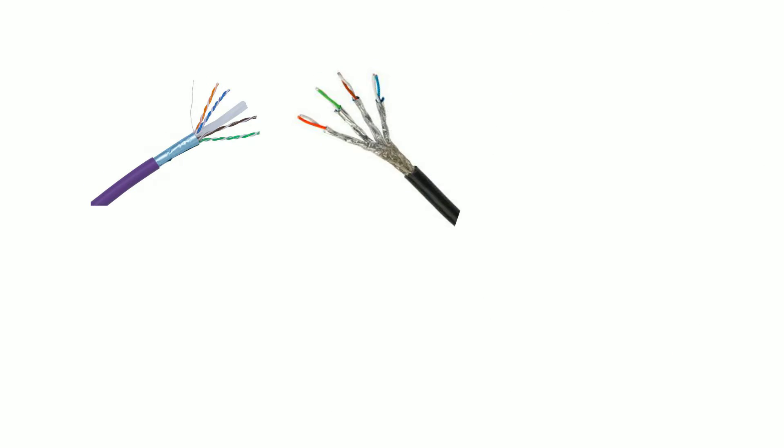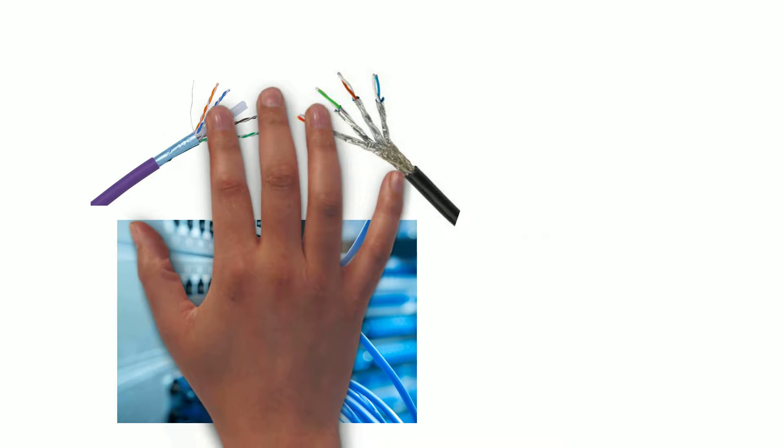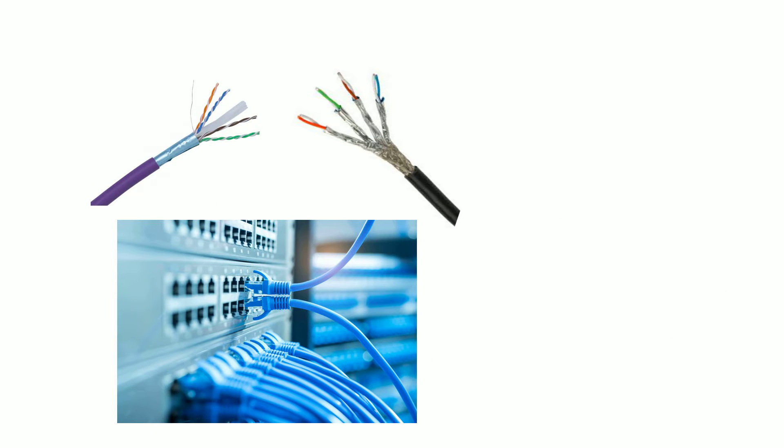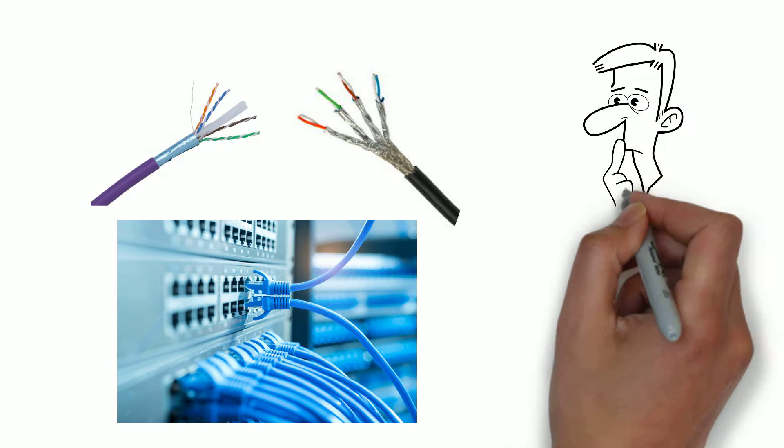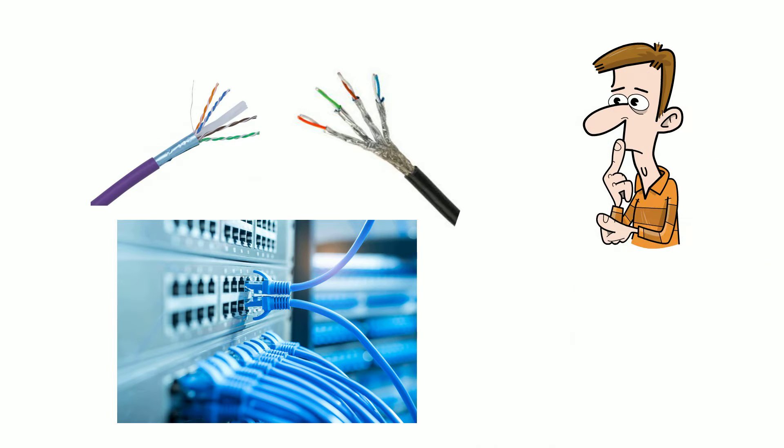CAT6 and CAT7 are both types of Ethernet cable used to connect devices in a wired network. While they serve the same purpose, there are several key differences. In this video, we're going to look at what those differences are.